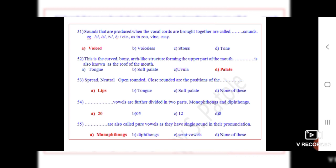Question number 53: Spread, neutral, open rounded, close rounded are the positions of the dot dot dot. The correct option is A, lips.